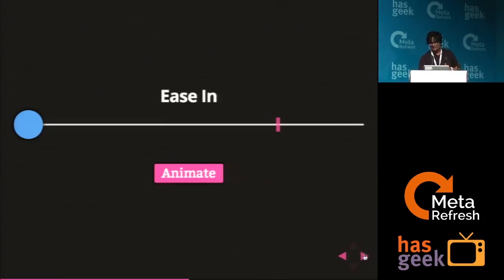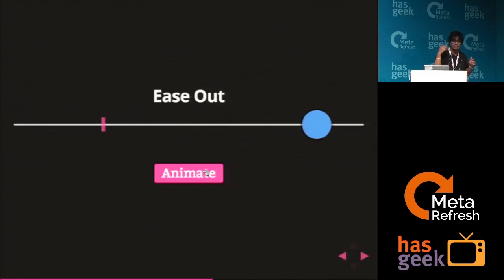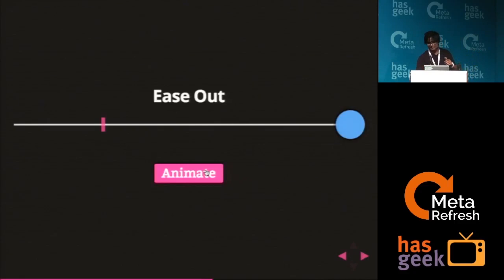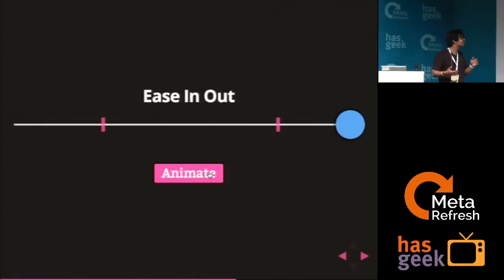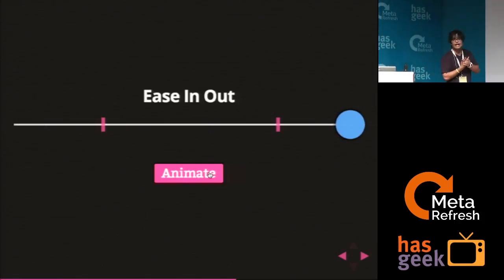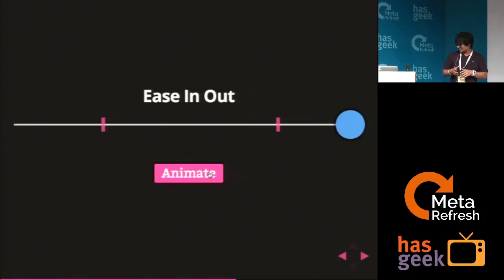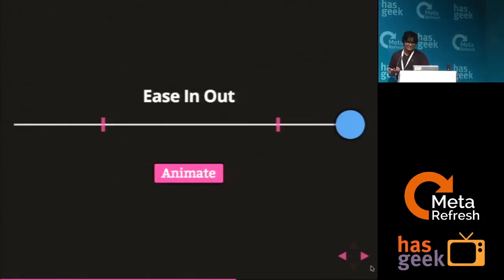Similarly, we have ease out — here the acceleration begins very rapidly and then deceleration occurs. And when we have these two together, we call it ease in-and-out. We have two change points, with acceleration and deceleration happening twice with a constant speed in the middle. So that's a bit of the physics behind animations and transitions.